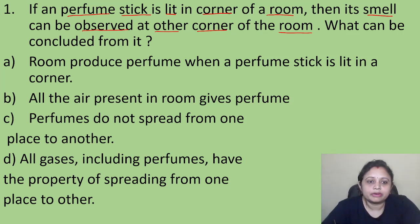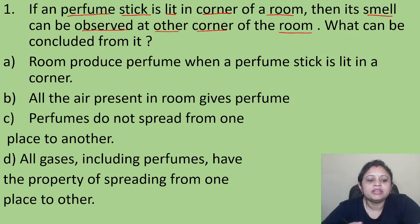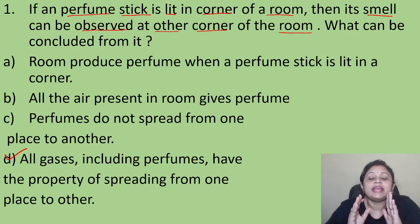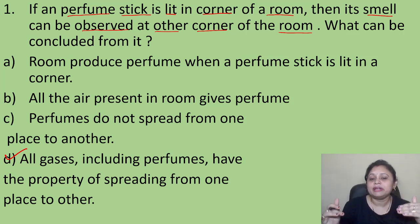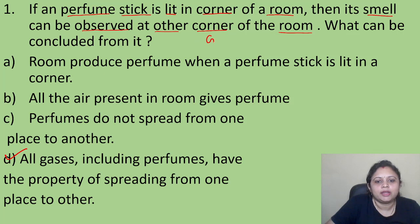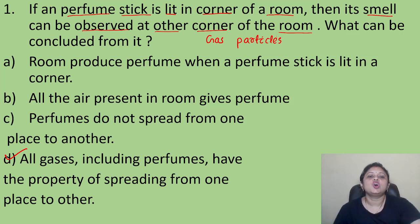When we light the perfume stick or spray perfume in one corner of the room, we can smell it in the other corner. This is happening because all gases, including perfumes, have the property of spreading from one place to another. That's why they can spread from one corner of the room to the other corner. These are the properties of gas particles. So the correct answer is Option D.